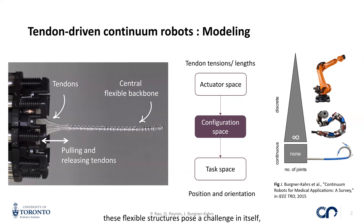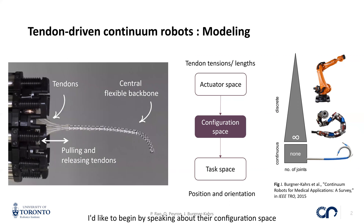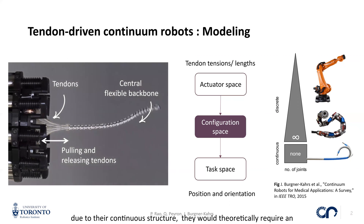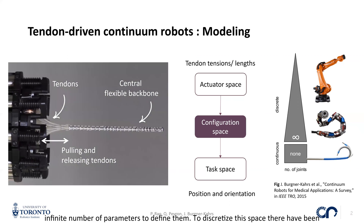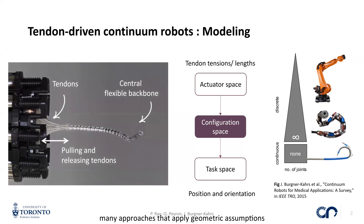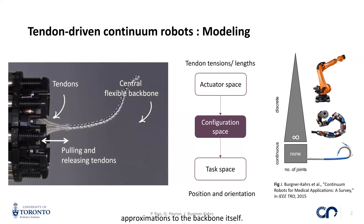While modeling these flexible structures poses a challenge in itself, I'd like to begin by speaking about their configuration space representation. As you can see on the right, due to their continuous structure, we would theoretically require an infinite number of parameters to define them. To discretize this space, there have been many approaches that rely on geometric assumptions and other approximations to the backbone itself.